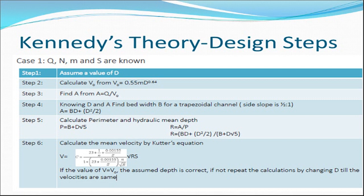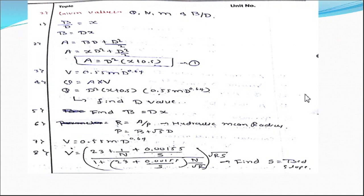Case 2: the given values are Q, n, m, and b/d ratio. Here Q is discharge, n is rugosity coefficient, m is critical velocity ratio, and b/d ratio is given. If b/d = x, then b = d × x. Using the standard area equation A = b×d + d²/2 and substituting b = d×x, we get: A = x×d² + d²/2, which simplifies to A = d²×(x + 0.5). This is equation number one.